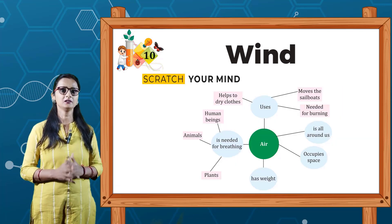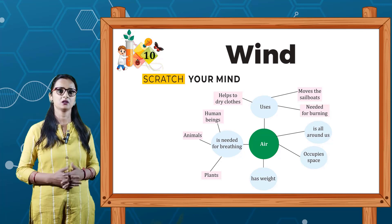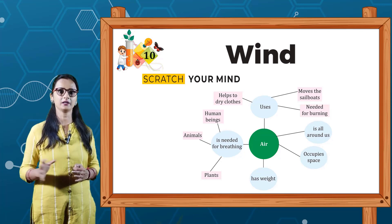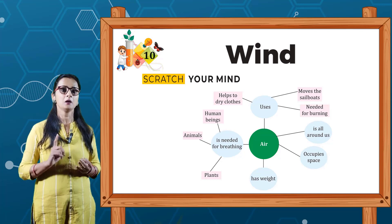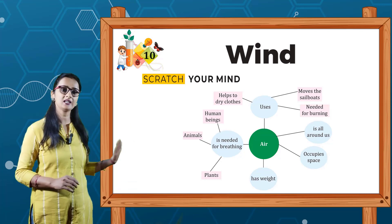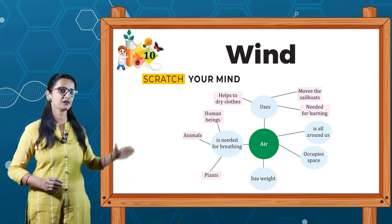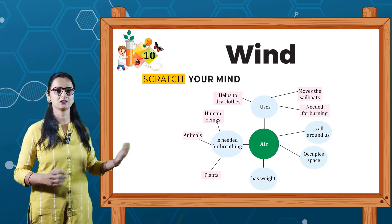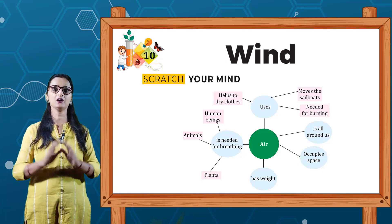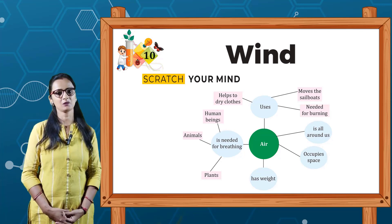Now, sketch your mind: Air — its uses, it is needed for breathing, it is all around us, it occupies space, and it has weight. Its uses: it helps us to dry clothes, move the sailboats, and is needed for burning. Air is needed for breathing by human beings, animals, and plants — all living things breathe. Air is all around us, occupies space, and has weight. Toh I hope aapko yeh chapter samajh mein aaya hoga. See you in the next chapter. Bye bye.